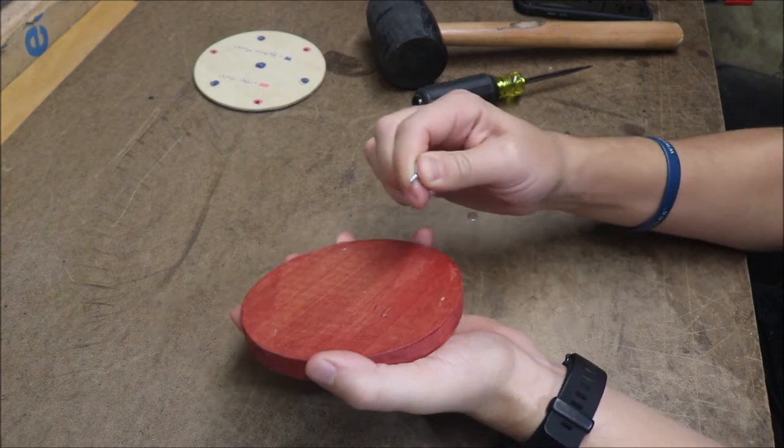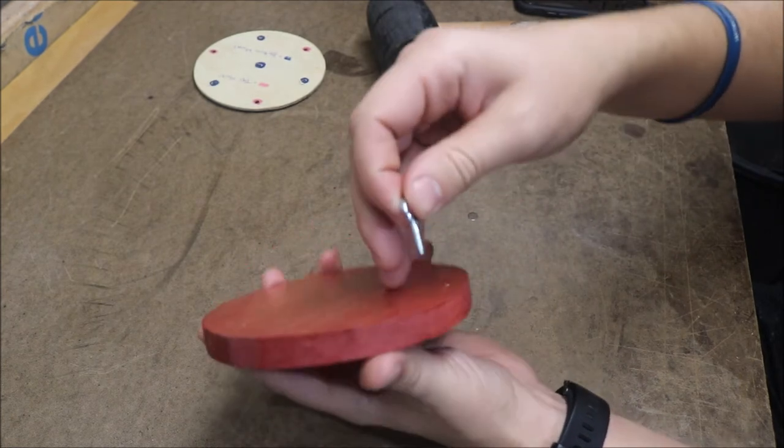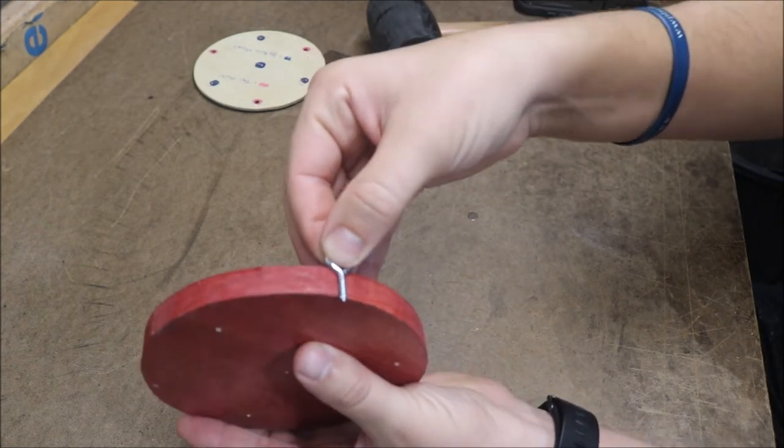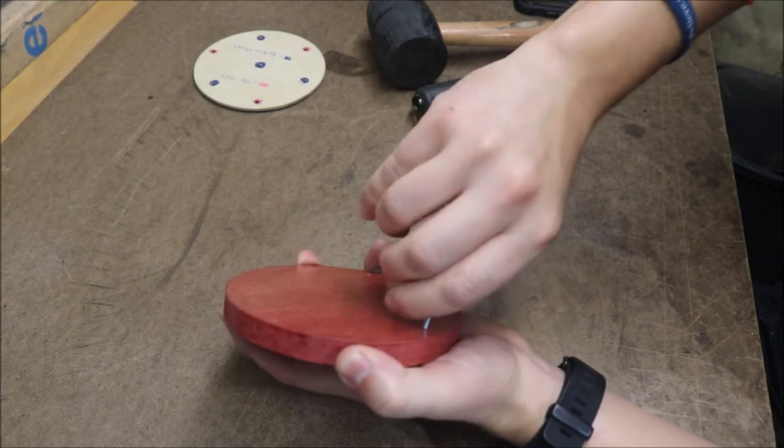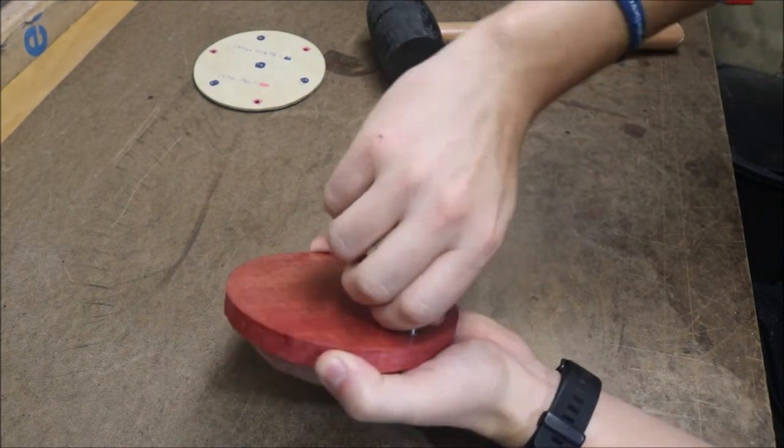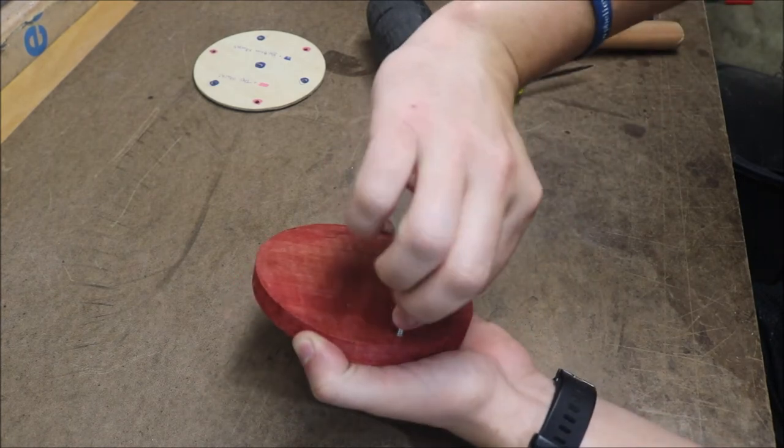The easiest way I found to do this is just to get it started, and then we're going to use the scratch awl to turn it in the rest of the way. Now our goal is we don't want to go through the whole way, or else the threads are going to pop out the other side. We're going to push into the wood, at least get it started, and you really have to grip it hard, push and turn, and do this a bunch of times until you really feel it start to grab.